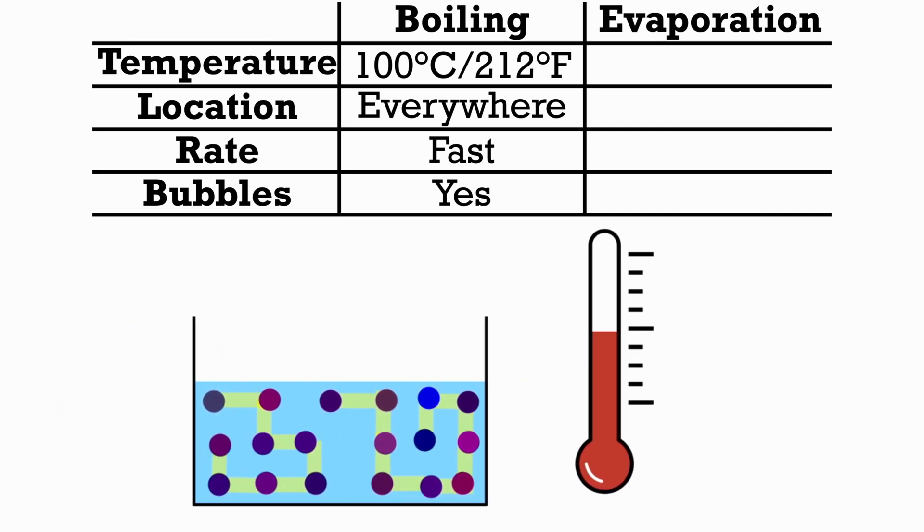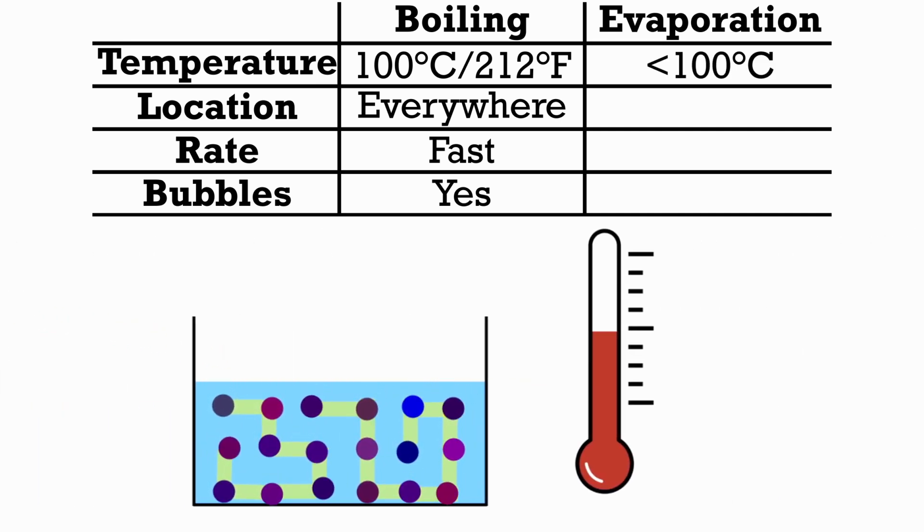On the other hand, evaporation occurs at temperatures much lower than the boiling point. The temperature is made up of the average temperature of all the molecules. At any given time some molecules are hotter and some are cooler. Evaporation occurs when one of the hotter molecules on the surface of the liquid has enough energy to break away from the molecules close to it, so it can escape into the air above.